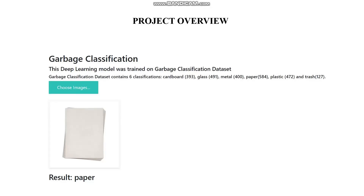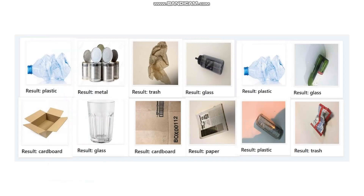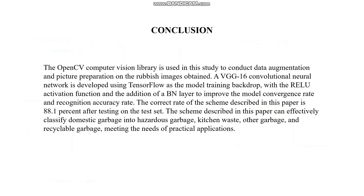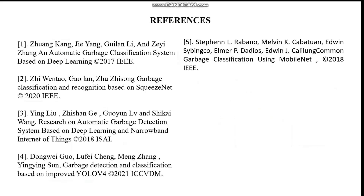Here are some images of our input and output that we got after analyzing. These are the images that the model detects automatically and identifies which garbage category it belongs to. The conclusion of our project was to classify garbage images by passing them through our trained model and predicting the type of garbage items among the six categories used to train the model. These images can be used for further recycling purposes. Here are the references we have mentioned. Thank you.